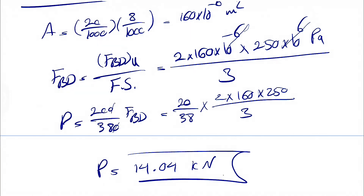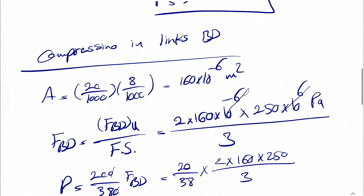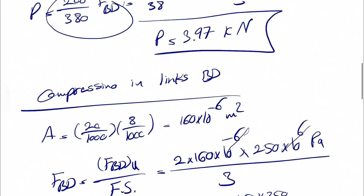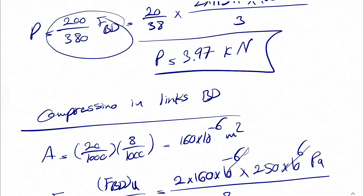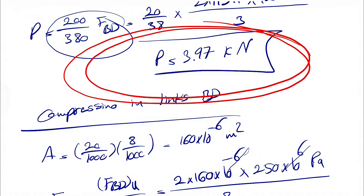As we can see, 14.04 kN is the greatest value among all three checks. Since we must go with the least force to ensure we're not compromising the system, the final answer for this question is 3.97 kilonewtons. Hope that was clear — let me know if you have any questions, and I'll see you in the next video.